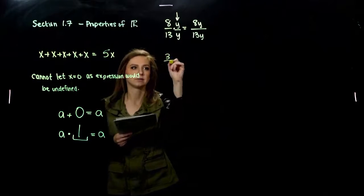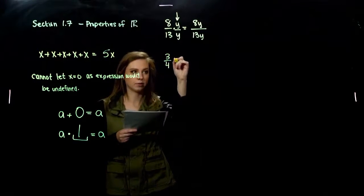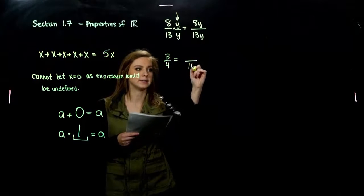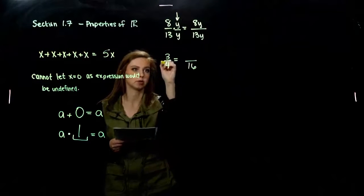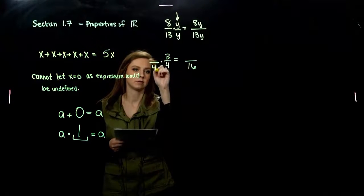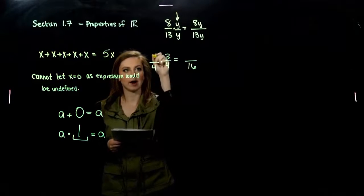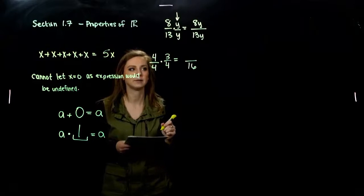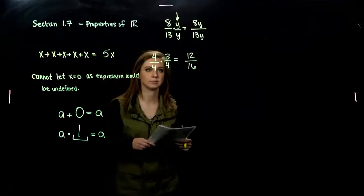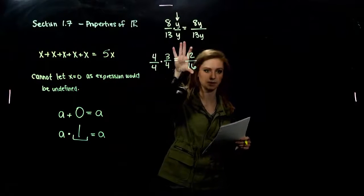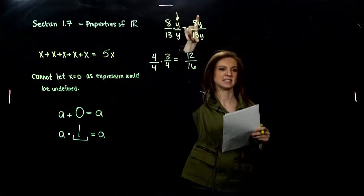What about 3 fourths? If I want to rewrite that with a denominator of 16, to turn 4 into 16, I have to multiply by a factor of 4. Whatever I do to the bottom, I have to do to the top. So equivalently, 3 over 4 is the same as 12 over 16. Simplified, not simplified. Simplified, not simplified.